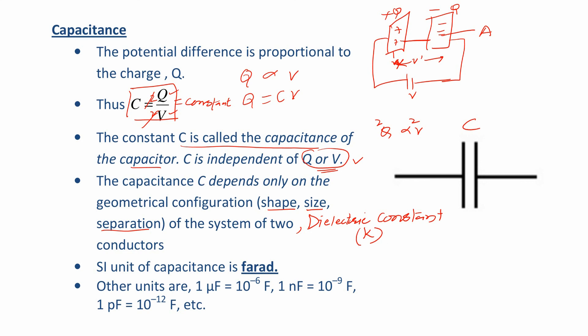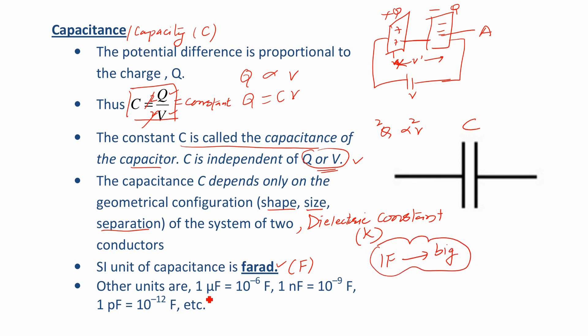Now, how to measure the capacity of the capacitor — capacitance is also called capacity, denoted by C. The SI unit of capacitance is the farad, named after the great scientist Michael Faraday, abbreviated as capital F. One farad is a very large capacitance — practically it is not possible in most circuits — so smaller units are used: one microfarad = 10⁻⁶ F, one nanofarad = 10⁻⁹ F, one picofarad = 10⁻¹² F. Dear students, the rest of the information will be uploaded in the next lecture. Till then, make your concept clear regarding this basic knowledge of capacitance and conductors. Thank you, have a nice day.